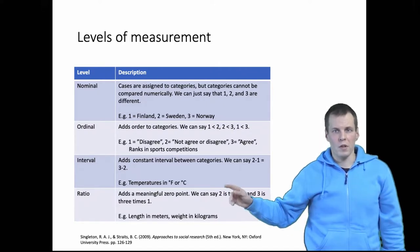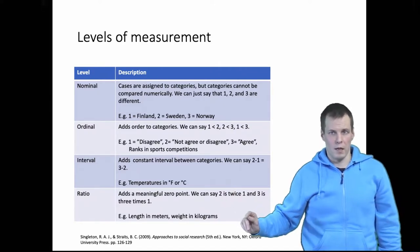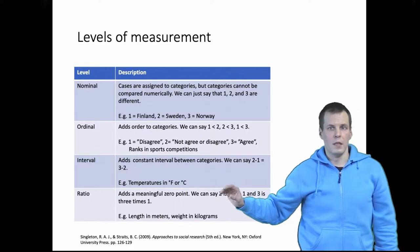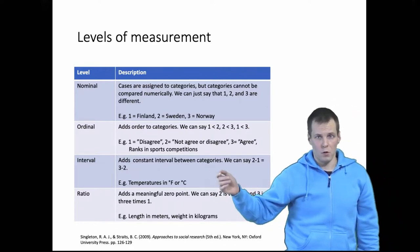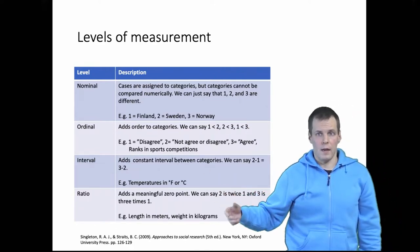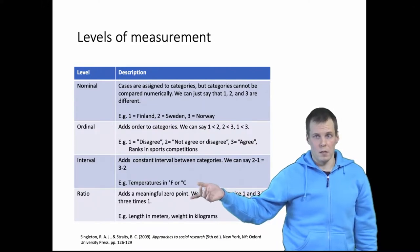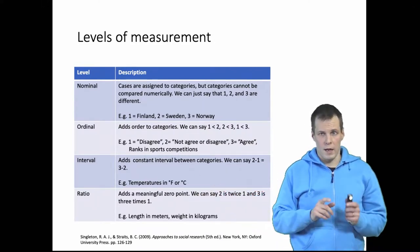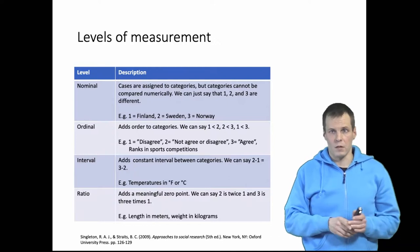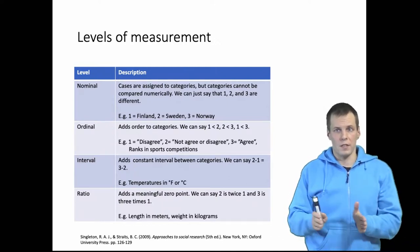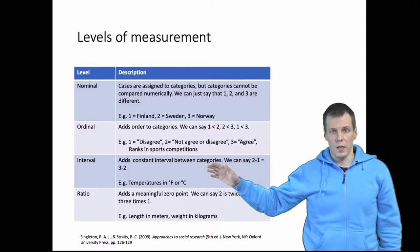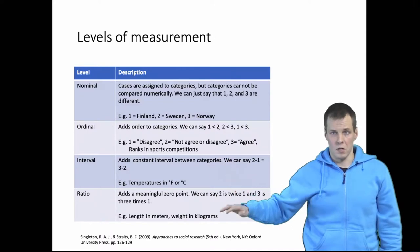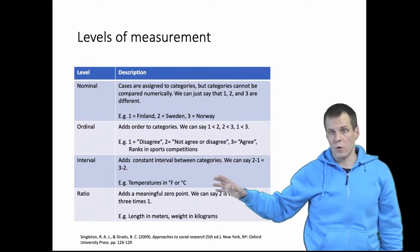When we add a constant interval between categories, then we have interval measurement and we can say that two minus one is the same as three minus two. An example would be a Fahrenheit or Celsius temperature scale. So the unit has meaning — the difference between one and two is the same as two and three — but the difference between interval scale and ratio scale is that there is no meaningful zero point.